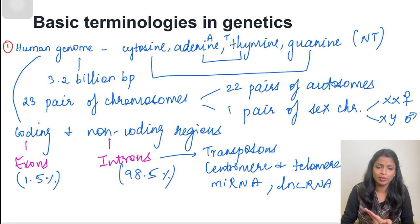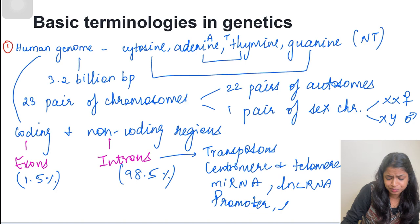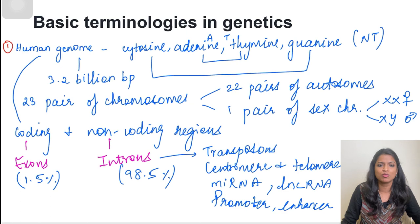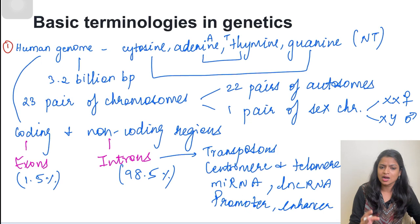We also have promoter regions and enhancer regions. These are regions of the gene to which transcription factors attach, and only when transcription factors attach to these promoter and enhancer regions does transcription of the protein take place, resulting in gene expression. So non-coding regions include transposons, promoter/enhancer regions, non-coding RNAs like lncRNA and micro RNA, centromeres, and telomeres. Exons and introns are both important.